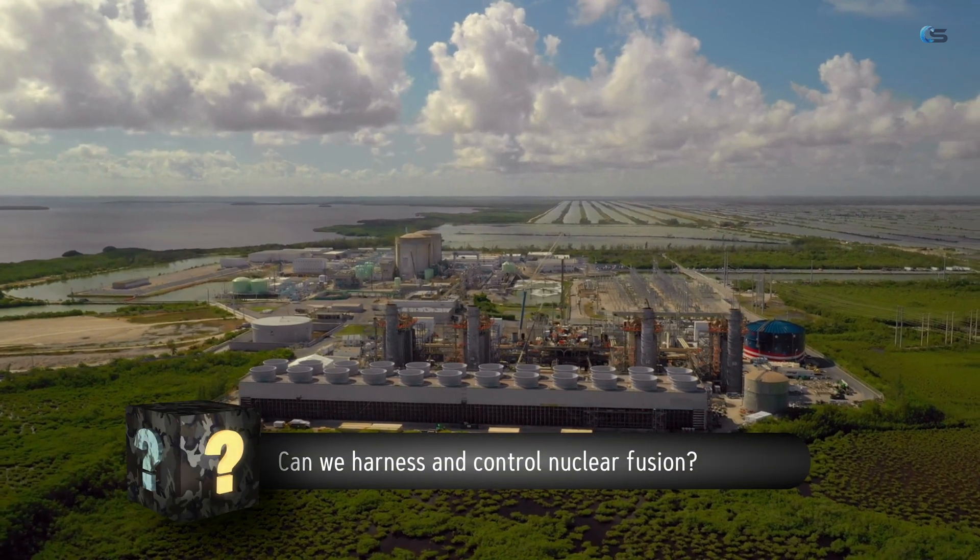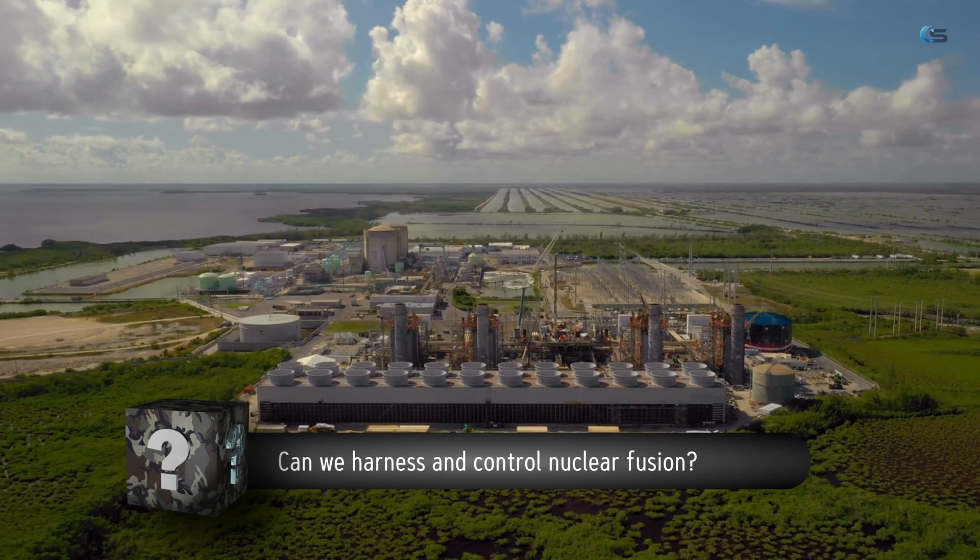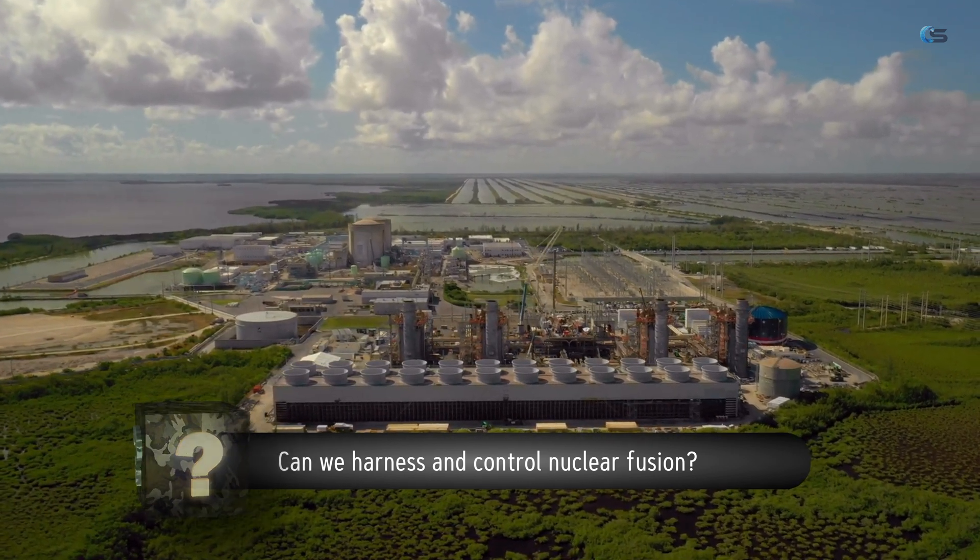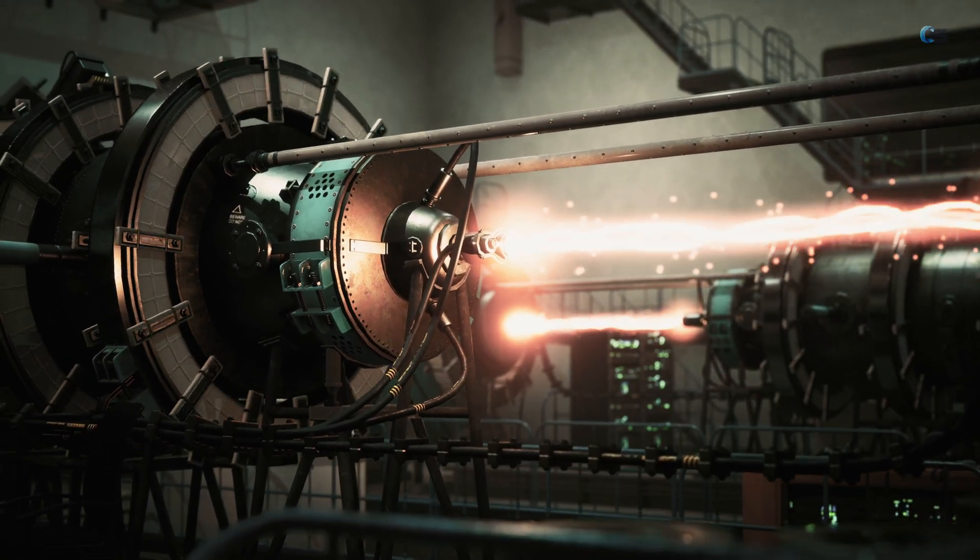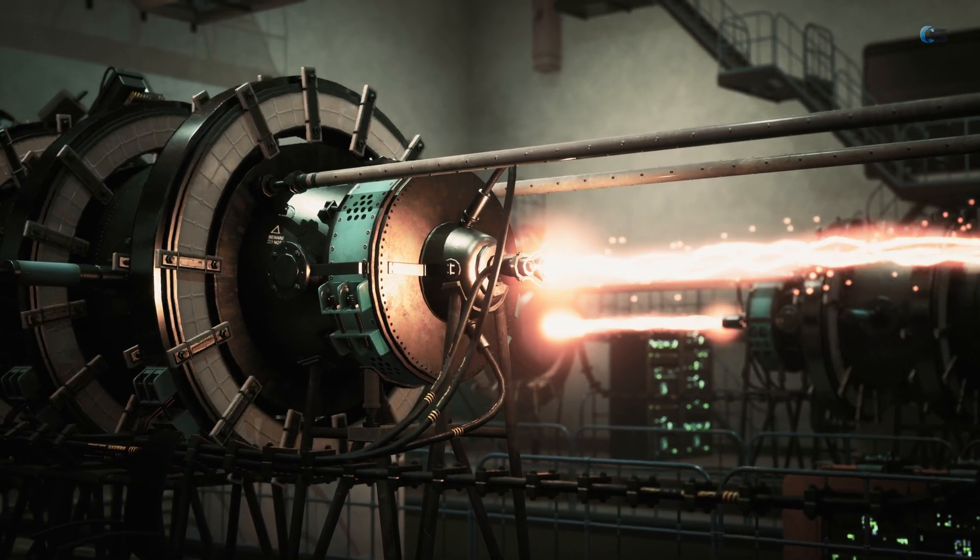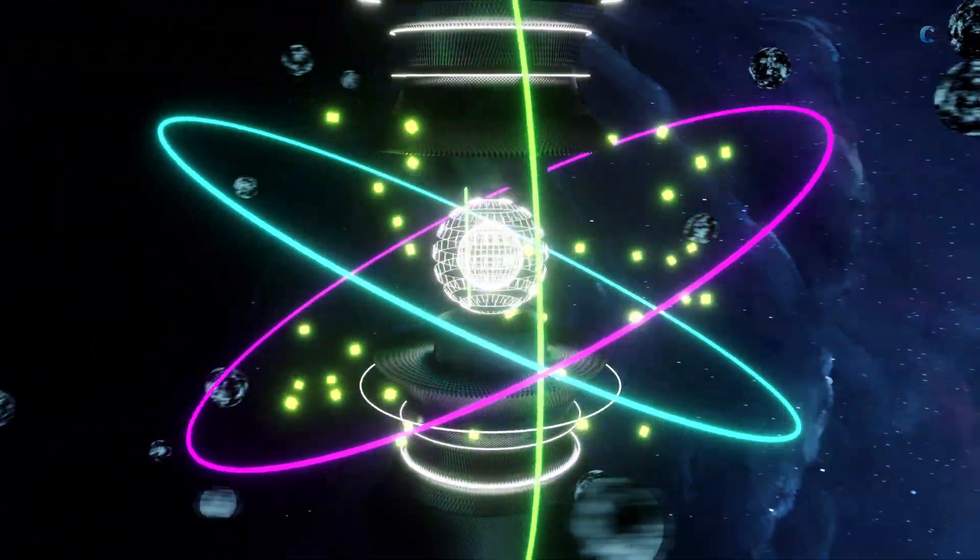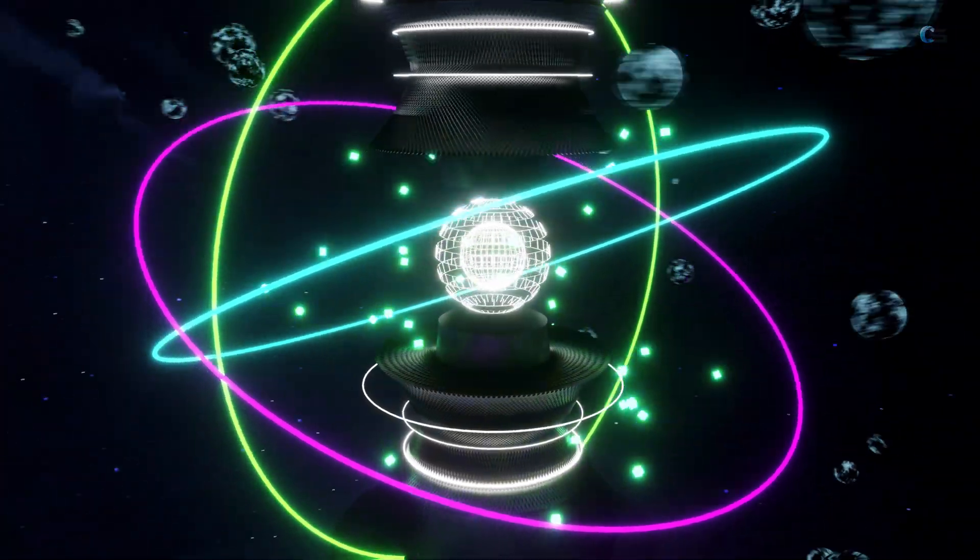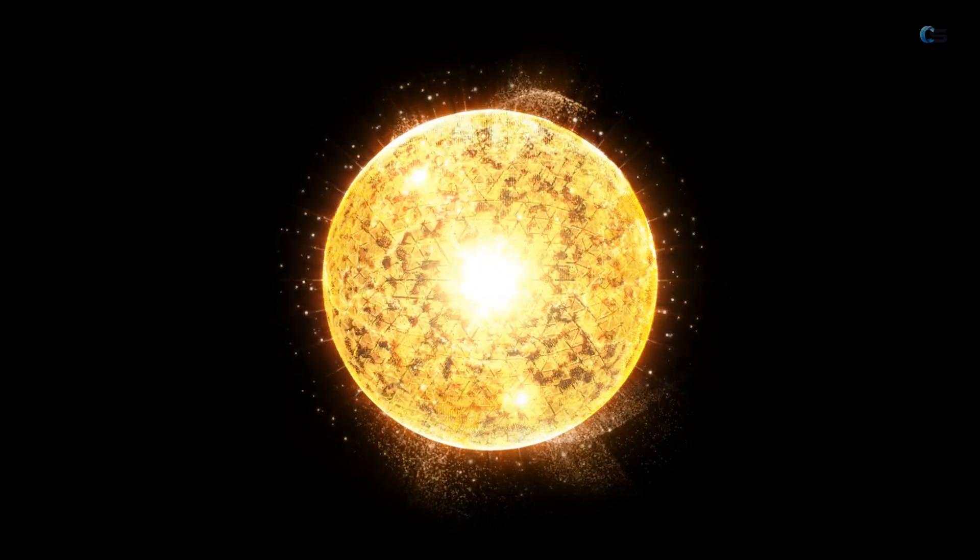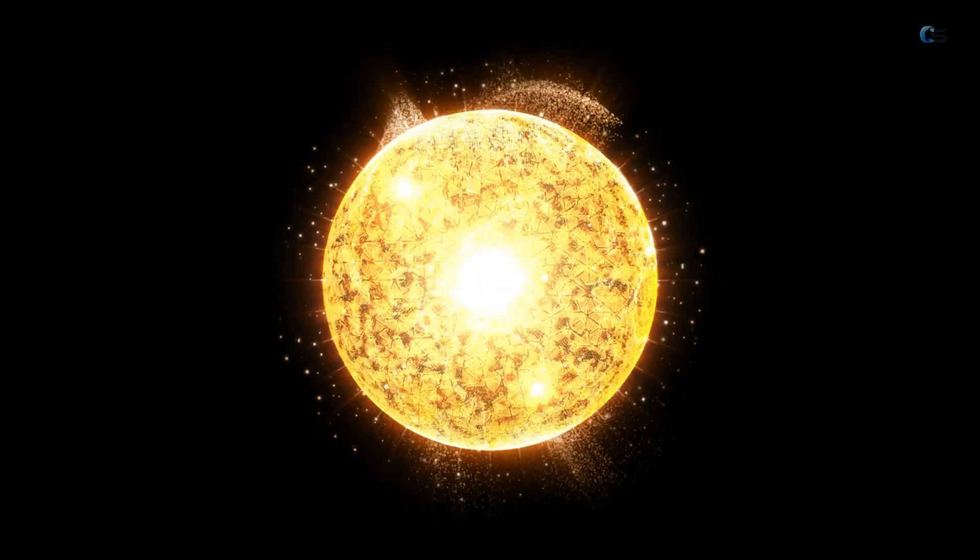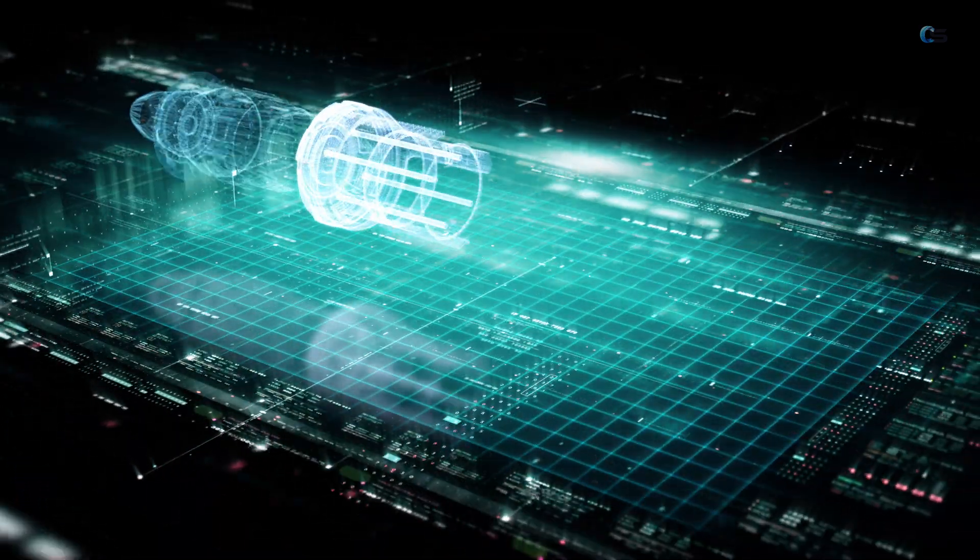Question number 16. Can we harness and control nuclear fusion for unlimited clean energy? Nuclear fusion has the potential to revolutionize energy production, but achieving controlled sustained fusion reactions on Earth has proven challenging. Scientists are working on this problem. Nuclear fusion is the process by which two light atomic nuclei combine to form a heavier nucleus, releasing a tremendous amount of energy. It is the process that powers the Sun and other stars, and if harnessed on Earth, it has the potential to provide a nearly limitless and clean source of energy.